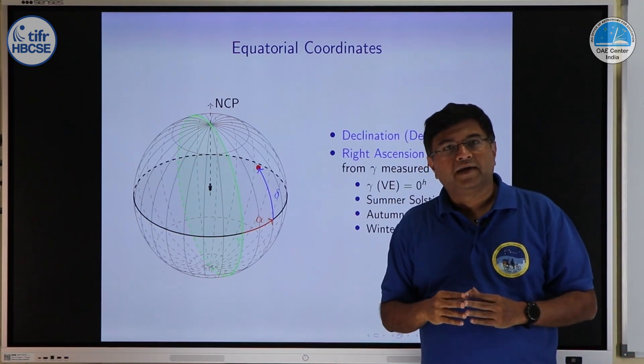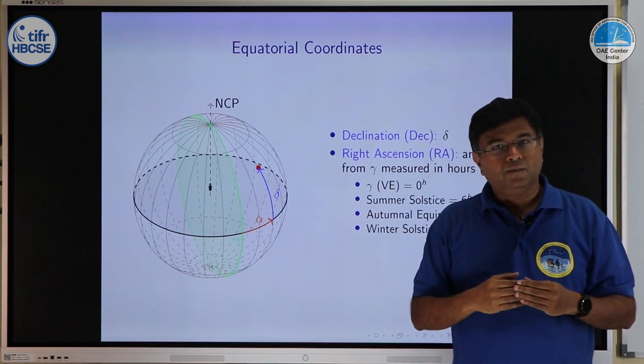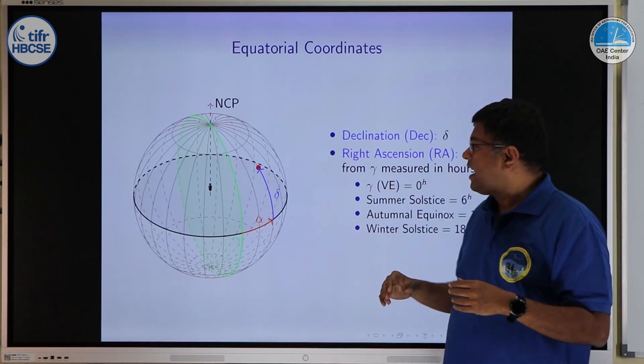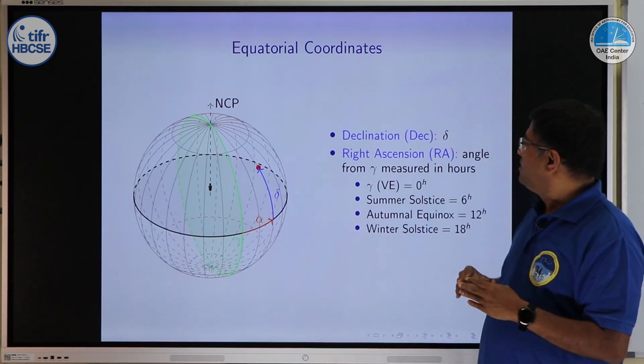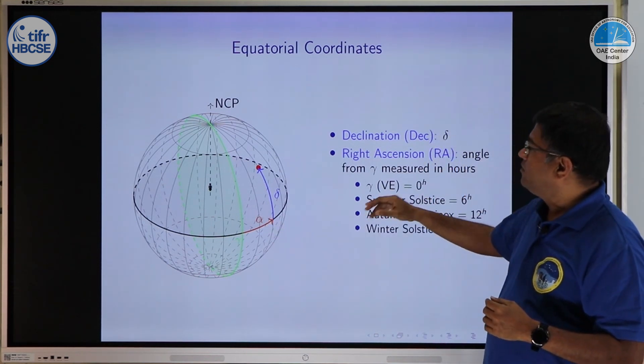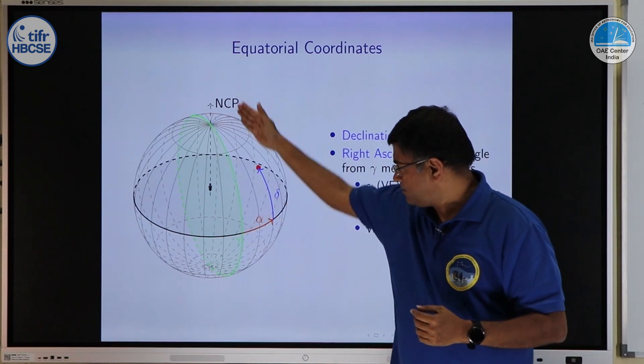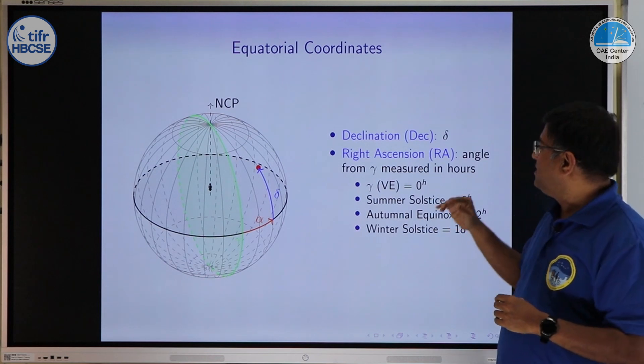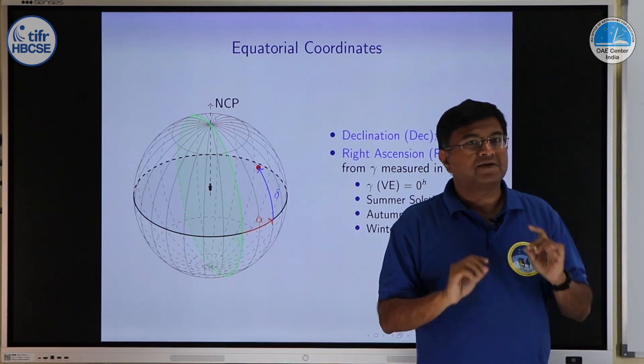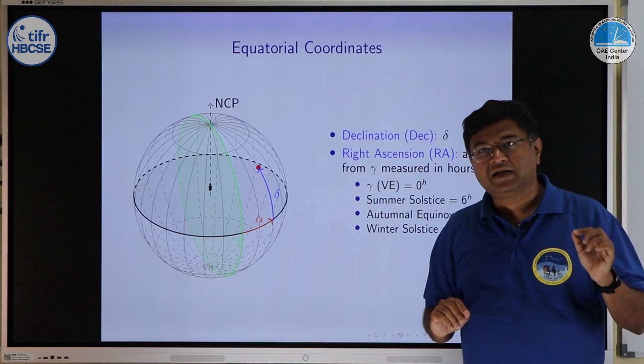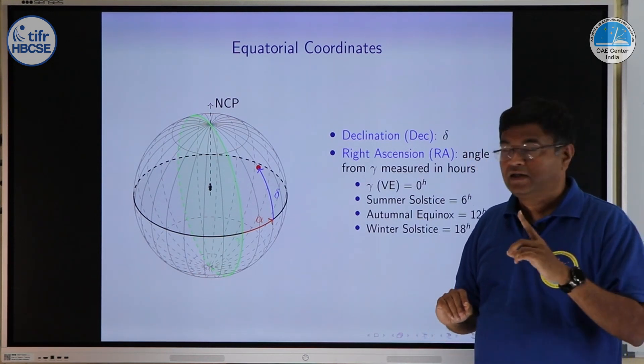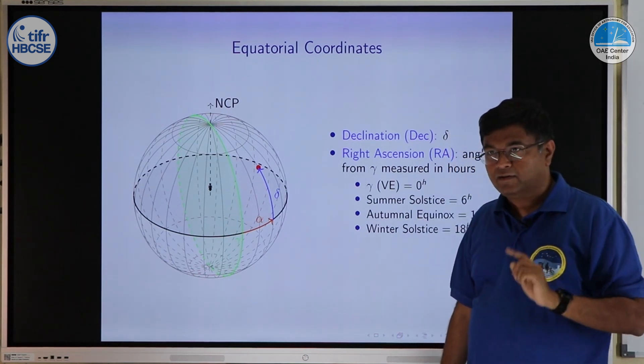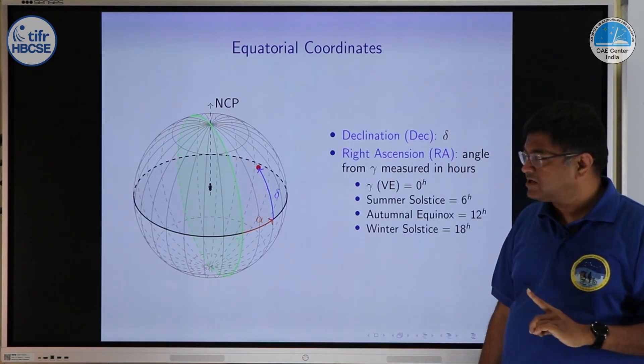The second coordinate is similar to longitude, we call it right ascension, RA, and it is given by symbol alpha. It is measured from the vernal equinox meridian eastward and it is measured in hours. It is not measured in degrees. Declination we were measuring in degrees, longitudes also we measure in degrees, but here this coordinate is measured in hours. Why? I will come to that in a minute, but right now remember it is hours.